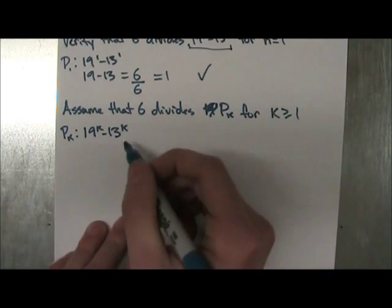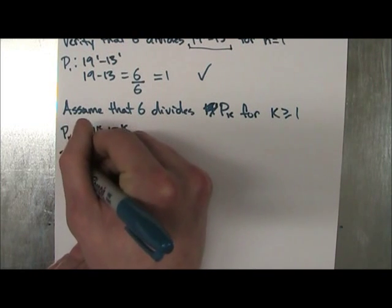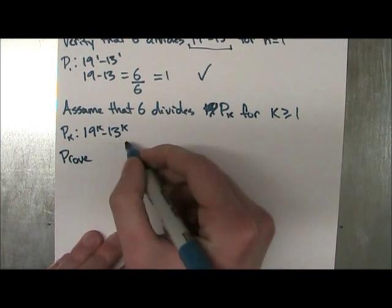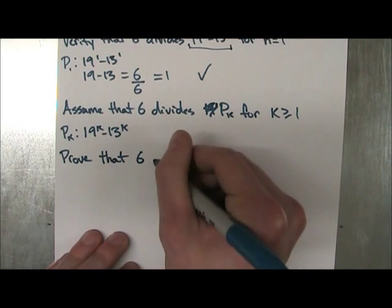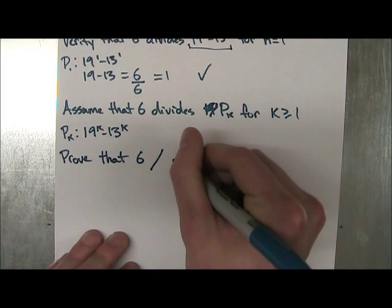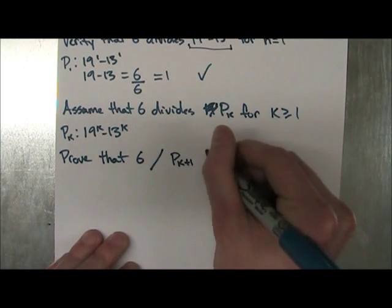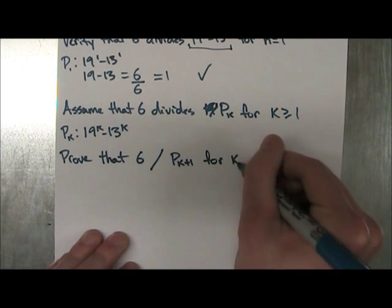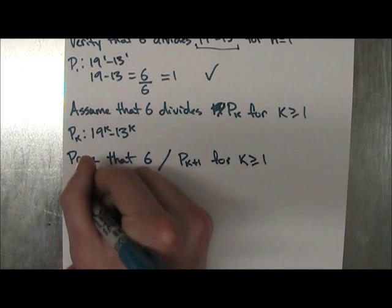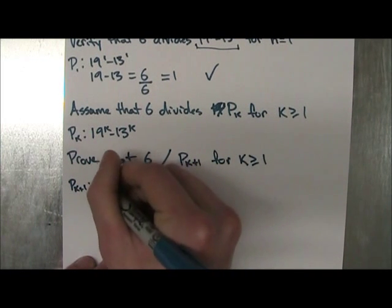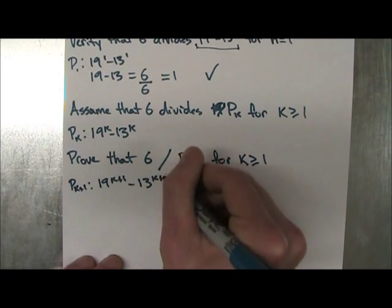Alright, so let's continue. So we assume this, and now the last step is to prove, because we assume this for every integer, but we have to prove that 6, and I'm going to use this, divides P_k plus the integer after that for k greater or equal to 1. And P_{k+1} is 19^{k+1} minus 13^{k+1}.